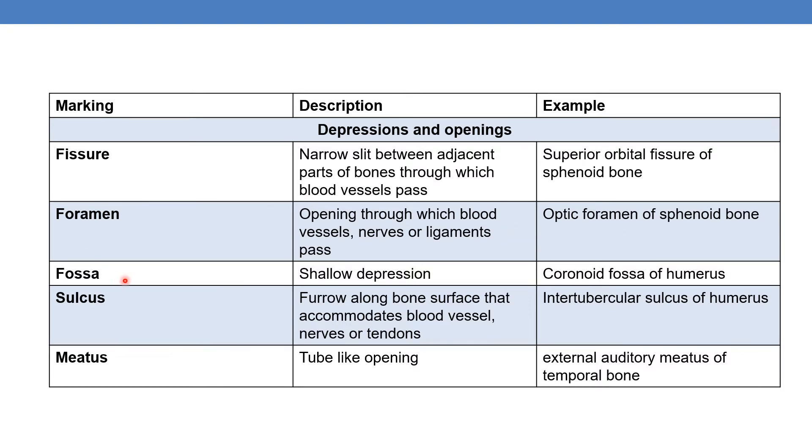Next is fossa — a shallow depression. An example is the coronoid fossa of the humerus.